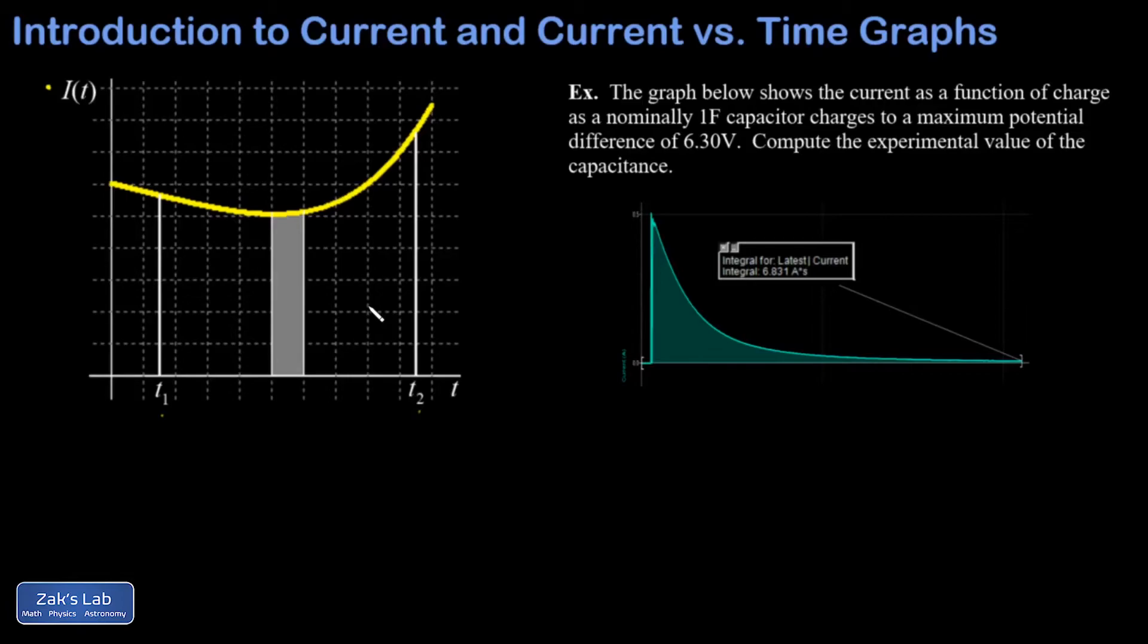If I say that we're located at some arbitrary time T, then the height here is actually the current evaluated at that time. The width, that's a little delta T.